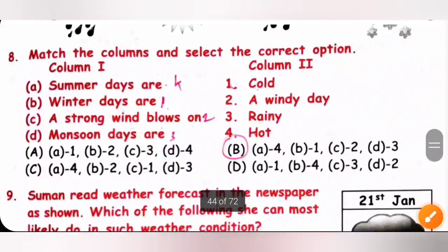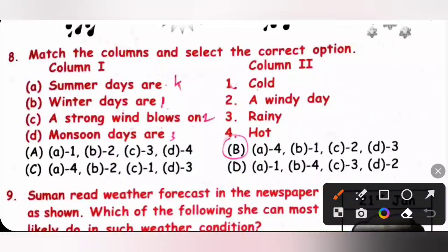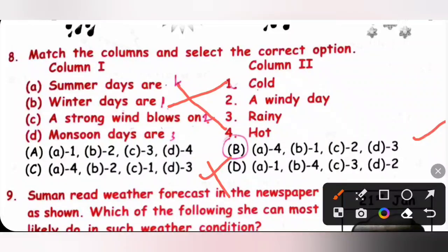Question 8: Match the columns and select the correct option. Summer — days are hot: A4. Winter — days are cold: B1. A strong wind blows on a windy day: C2. Monsoon — days are rainy: D3. So option B is the correct answer.